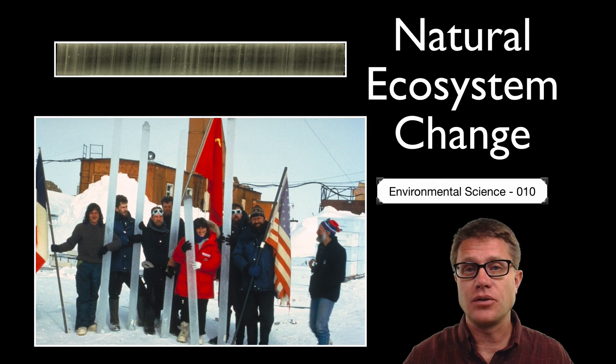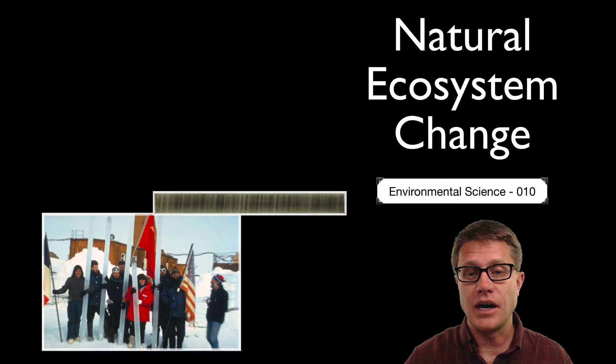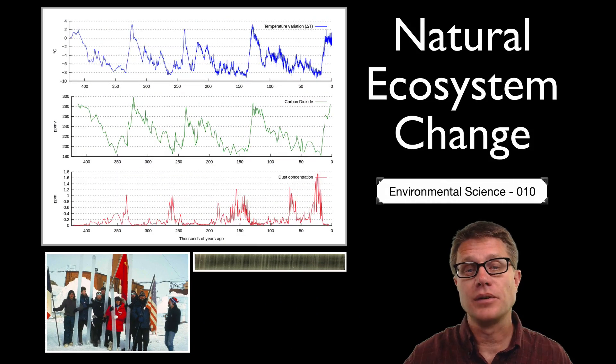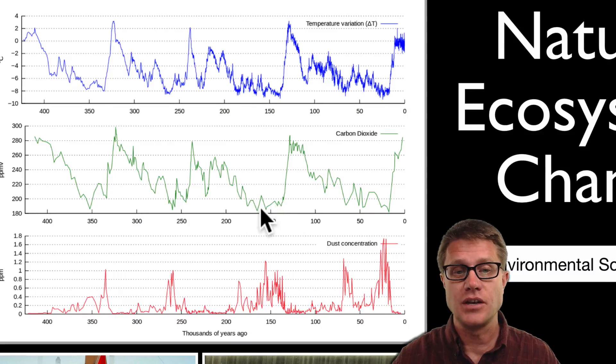In this picture these researchers are holding ice cores that they collected at Vostok station in Antarctica. We can take those ice cores, melt them in the lab and it releases this ancient atmosphere. So we could look at, for example, how carbon dioxide levels have changed over the last 450,000 years.